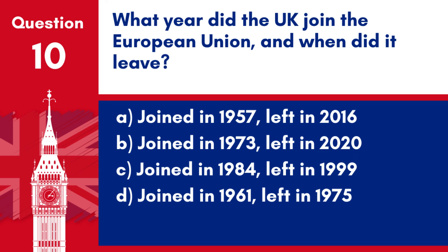Question 10. What year did the UK join the European Union and when did it leave? a. Joined in 1957, left in 2016. b. Joined in 1973, left in 2020. c. Joined in 1984, left in 1999. d. Joined in 1961, left in 1975.